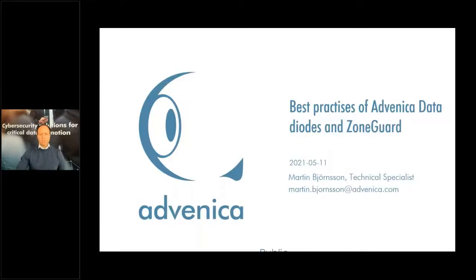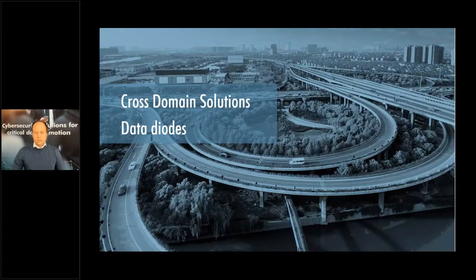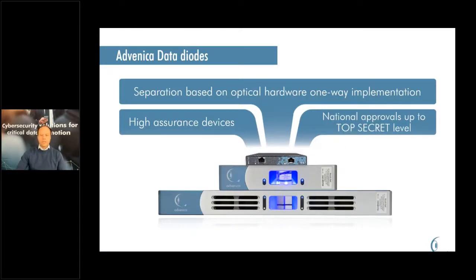My name is Martin Bjornsson and I'm a technical specialist at Advenica. I'm going to talk about Advenica data diodes and zone guards. Feel free to post your questions in the chat and I will try to answer them after the presentation. Data diodes allow data to flow in one direction and one direction only. Not a single bit of information can possibly pass through the device in the wrong direction. This one-way transfer of information is achieved using optical hardware and there's no soft configuration that can possibly override this very strict unidirectional data flow. There's no way a human error can possibly compromise the one-wayness of the device.